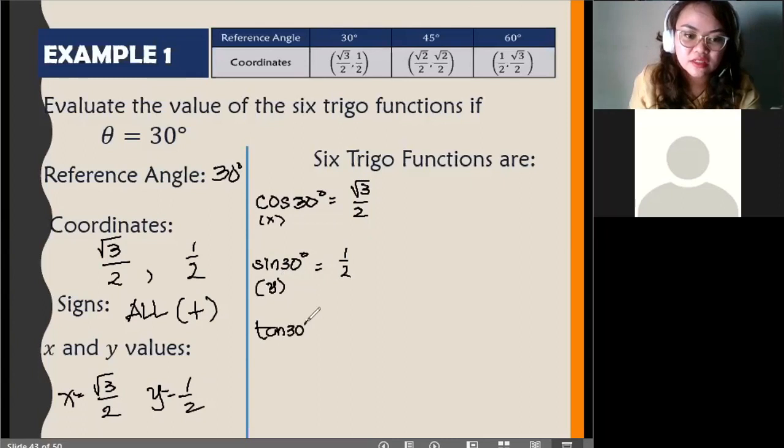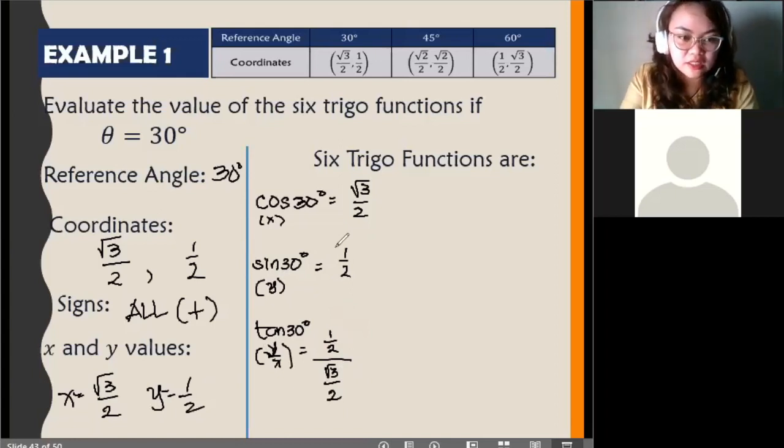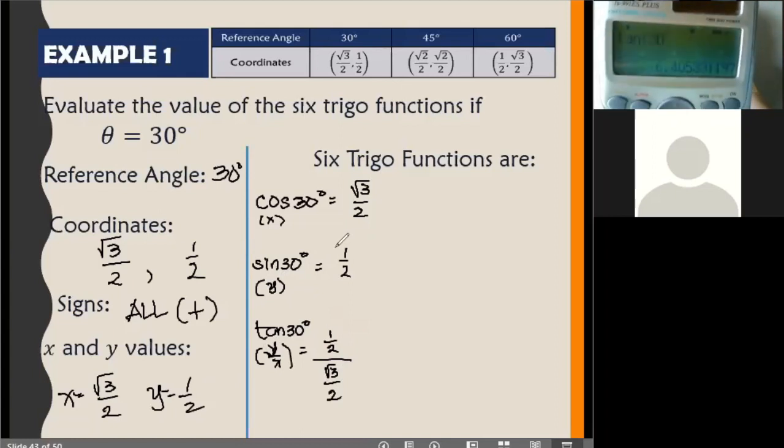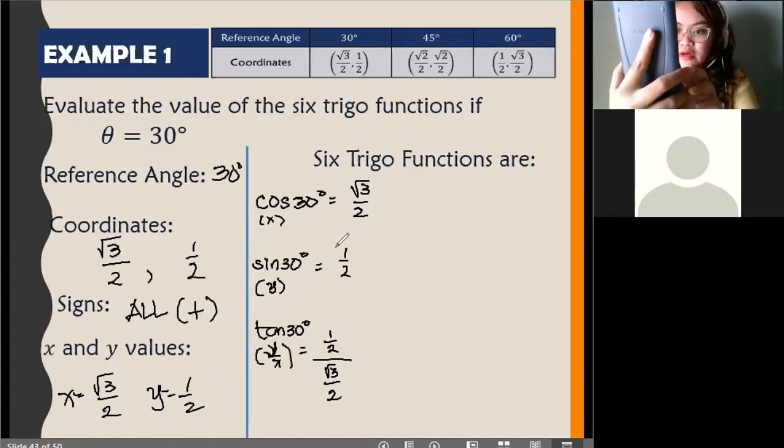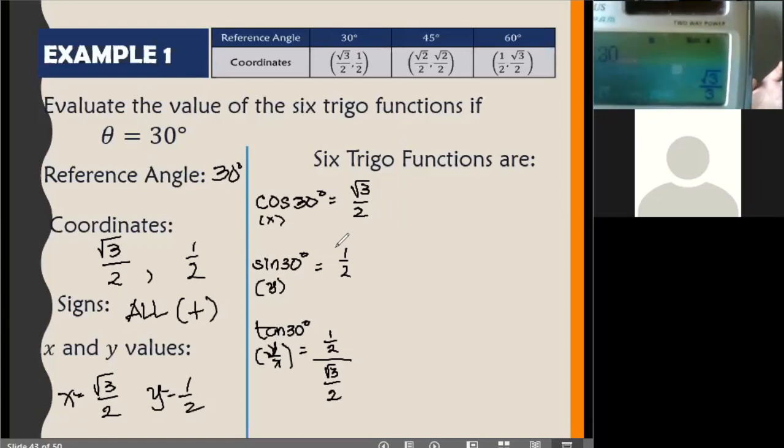So sunod, tangent 30 degrees. So that is y over x. You'll have one-half all over square root of 3 over 2. If you have your calculator, you should just type it directly na tangent 30 degrees. And you'll get the answer already. It is in fraction. So, let me change that. Of course, it's in fraction. I am not in degree. I forgot to change it. Okay. So, you'll get square root of 3 over 3.